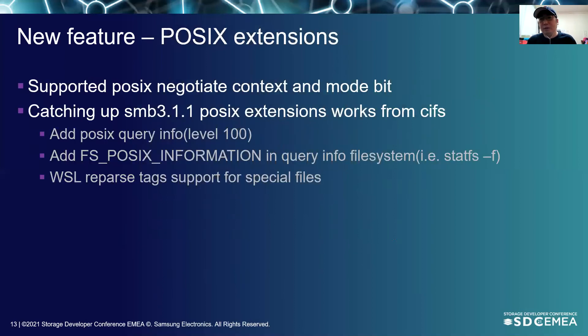SMB 3.1.1 POSIX extension support was only for POSIX negotiate context and mode bits in KSMD previously. We can share POSIX extension work from the kernel CIFS client, for example, POSIX query info, FS POSIX information for statfs, and POSIX query directory. We also added WSL reparse tag support for special files.